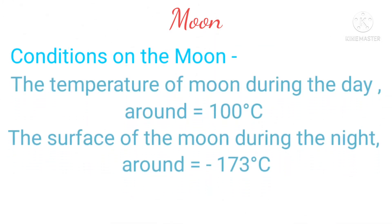Let us know the conditions of the moon. The temperature of the moon during the day is around 100 degrees Celsius. The surface temperature of the moon during the night is around minus 173 degrees Celsius.